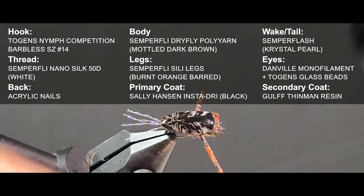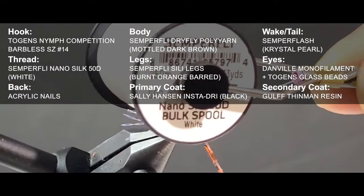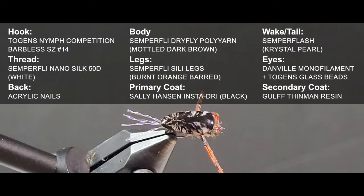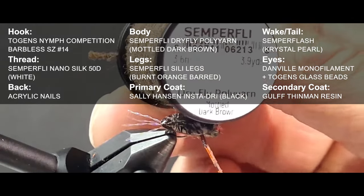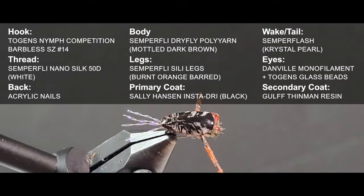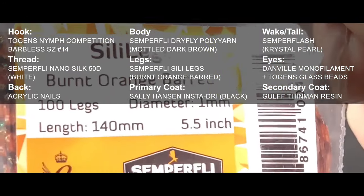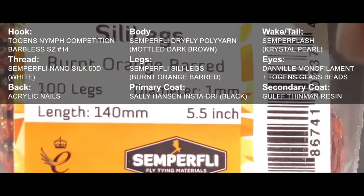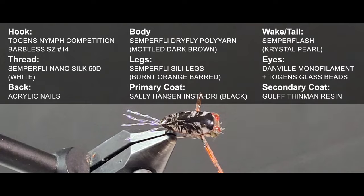For the thread I'm using Semperfly's Nano Silk in 50 denier or 12/0. For the body of this I'm going to use Semperfly's Dry Fly Poly Yarn, this is mottled dark brown color.